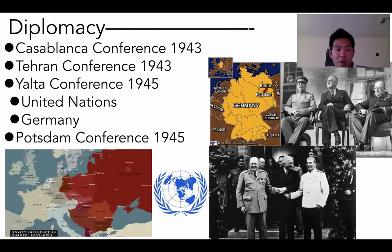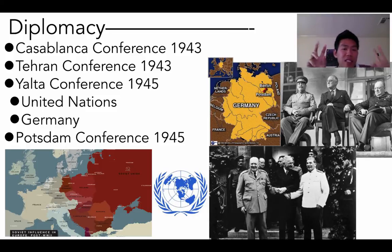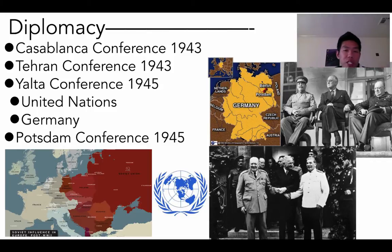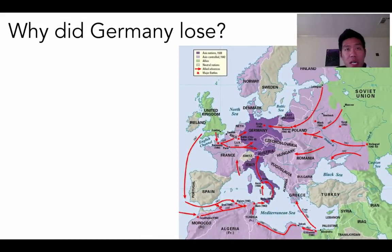At Potsdam, Truman decided to drop the atomic bomb on Japan. They also decided how to denazify and demilitarize Germany, as it was now in Allied hands to determine what to do with the defeated nation.